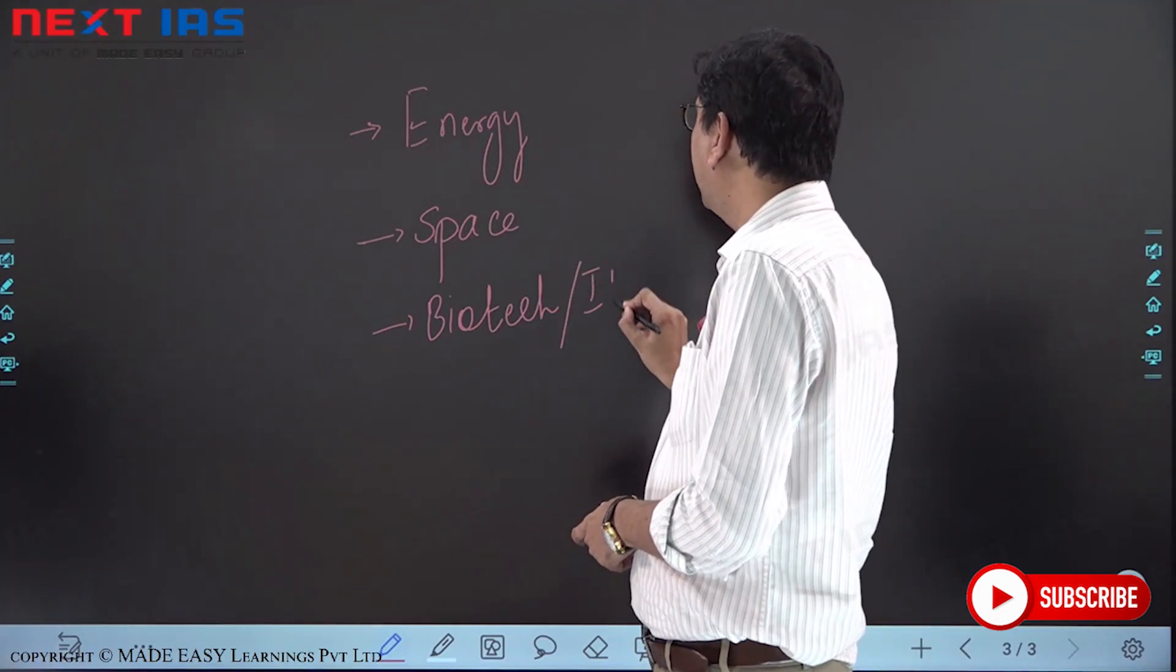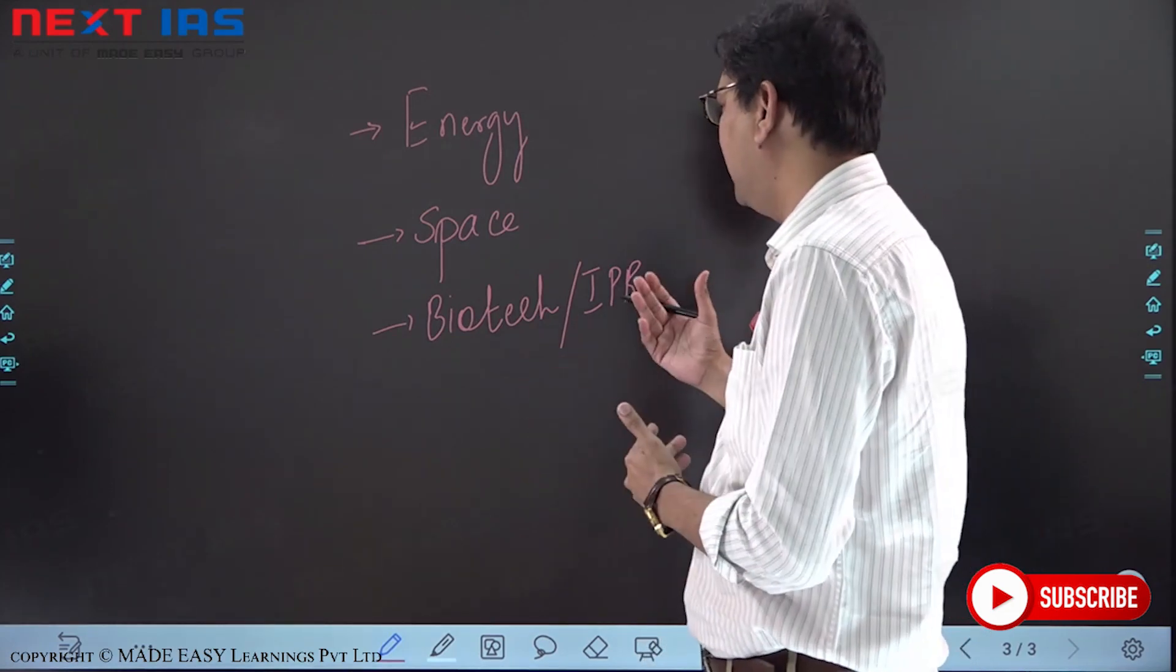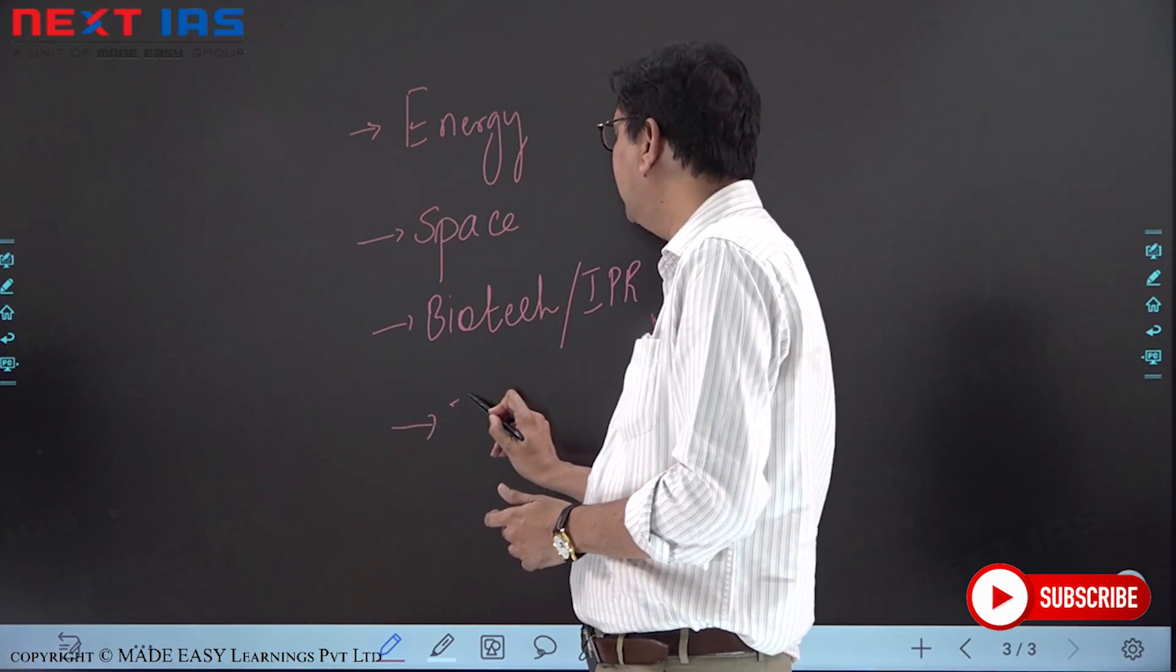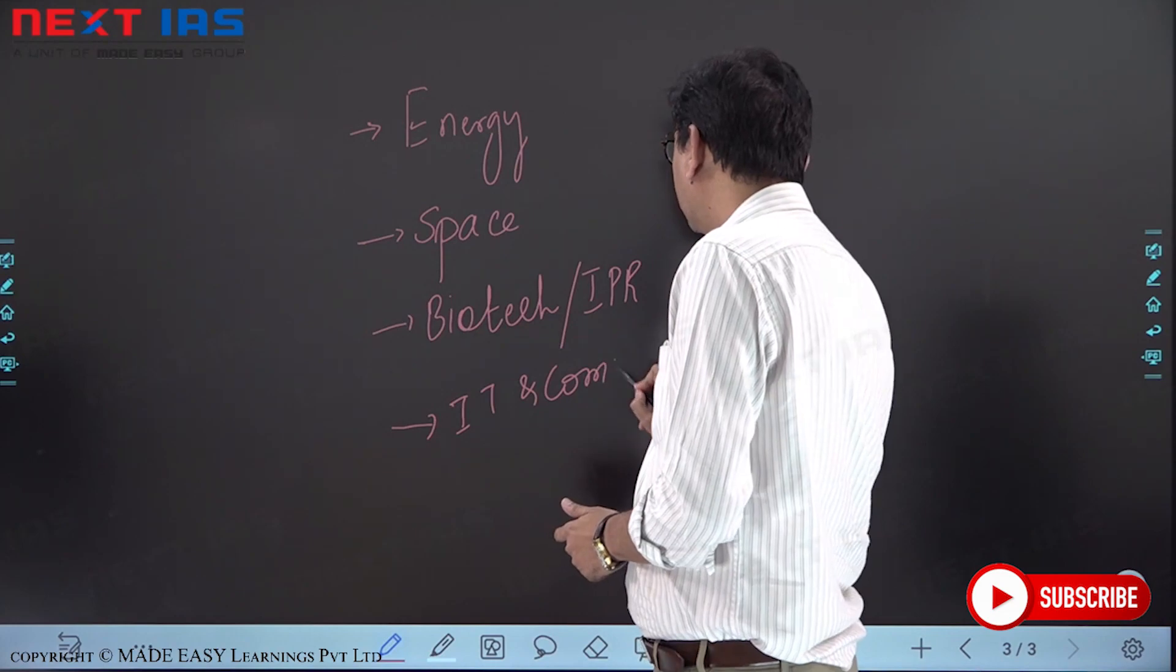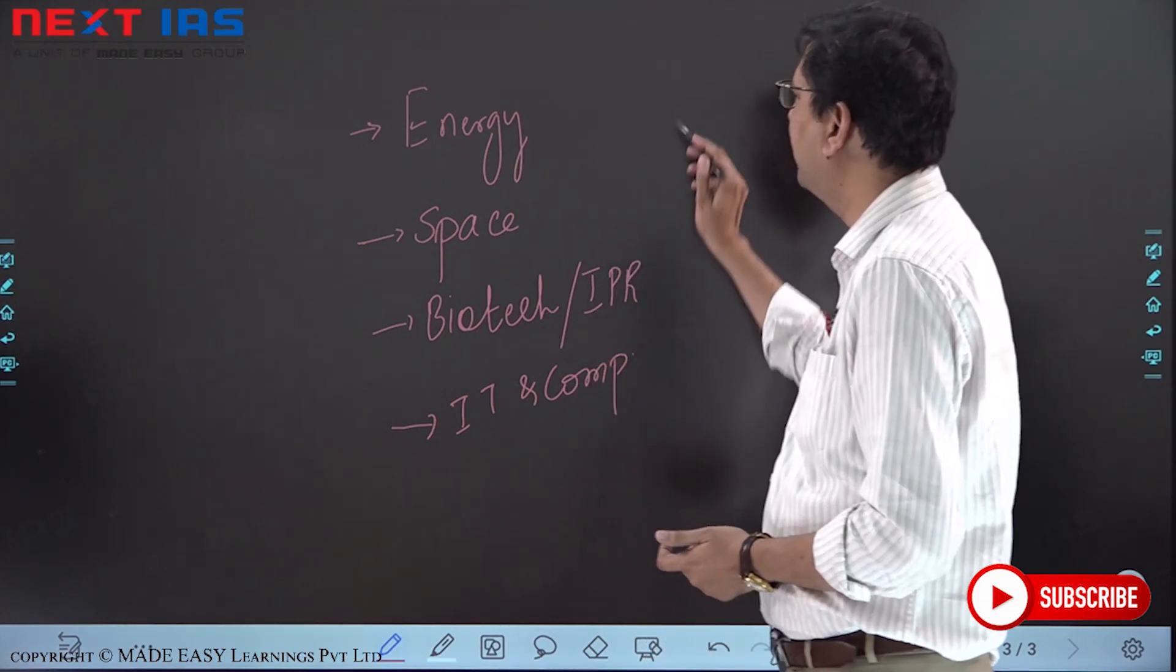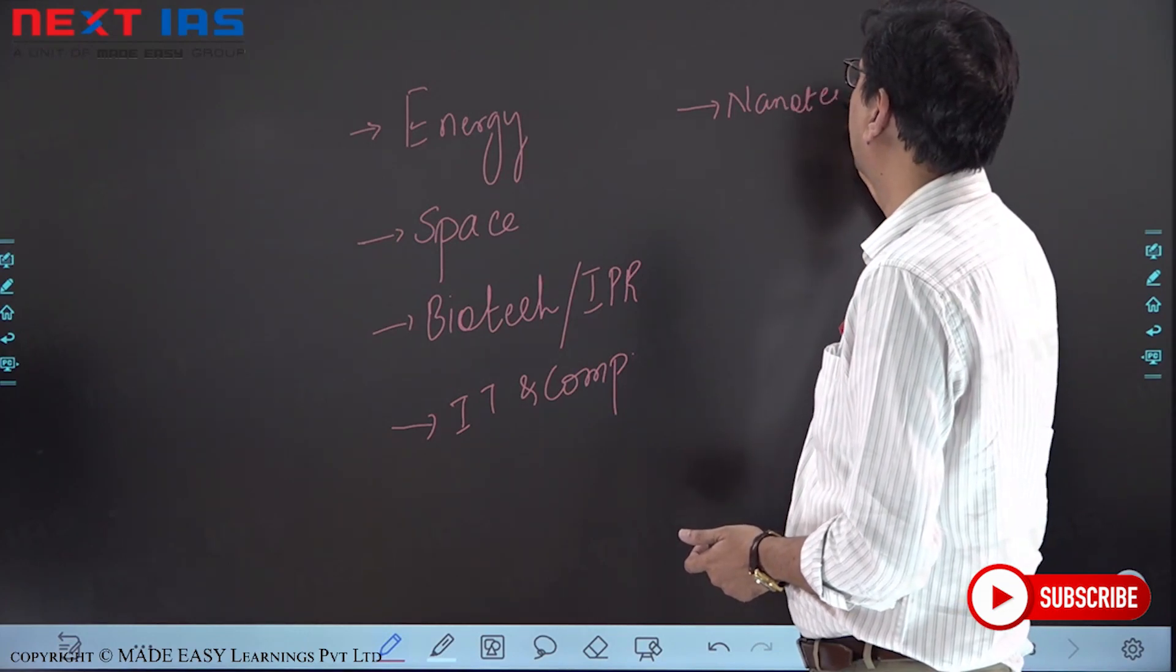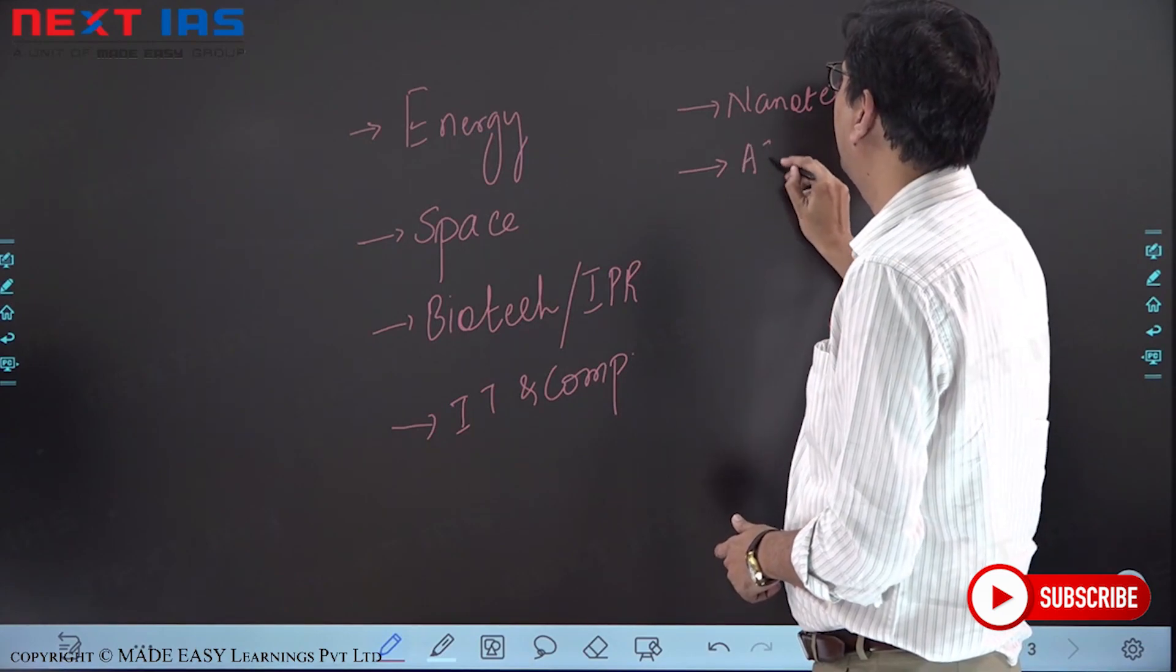There was a question on genome editing, biotech. There was a question on pro-nuclei transfer, biotech. Three questions were there as such a straightforward biotech. Then they have added one more topic, intellectual property right. Patent, copyright, trademark, trade secret, and all that. Then one more IT computers, nanotechnology, then artificial intelligence and robotics.